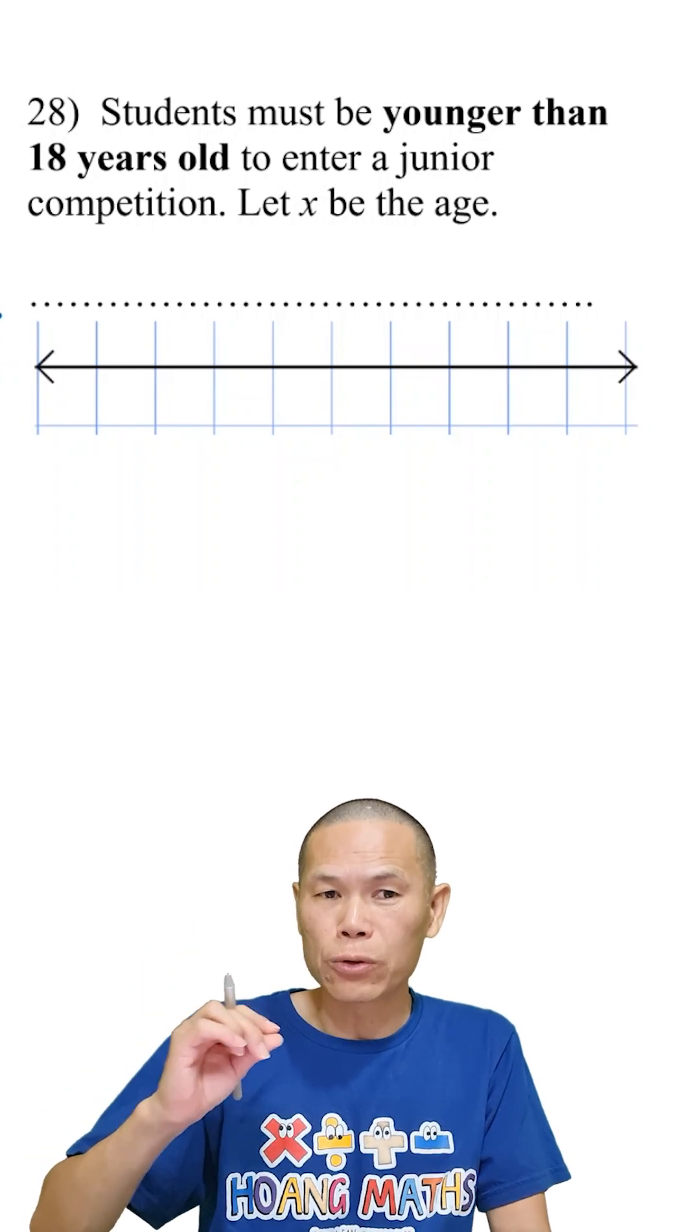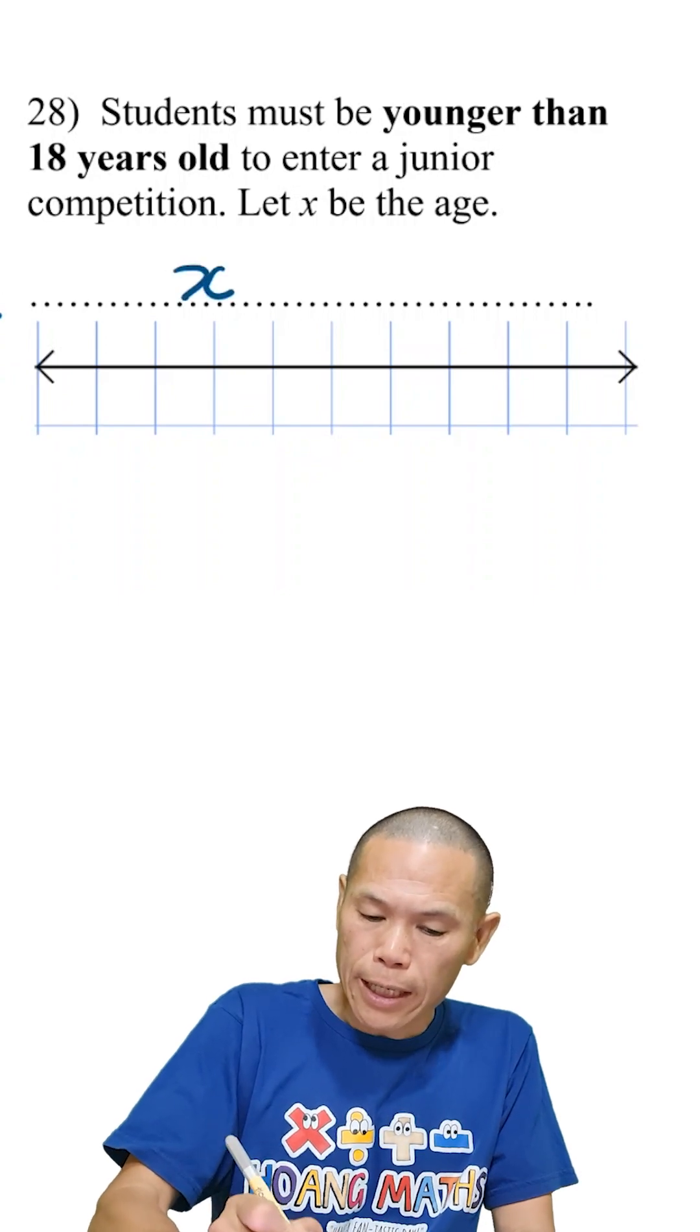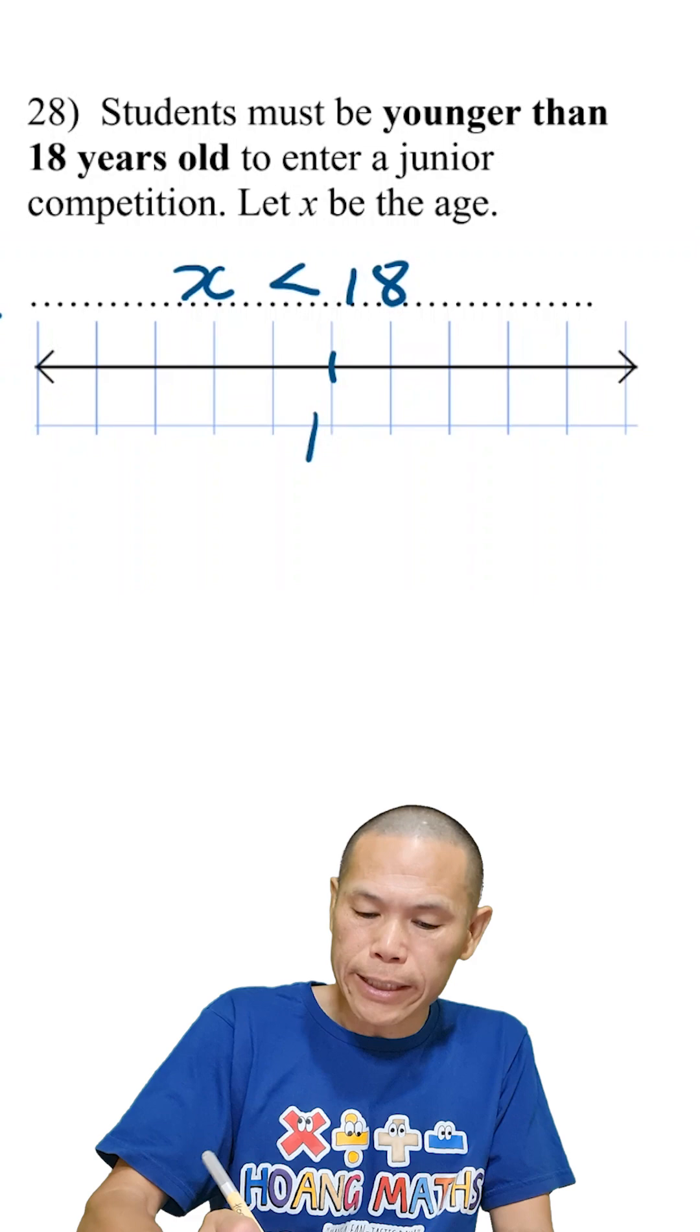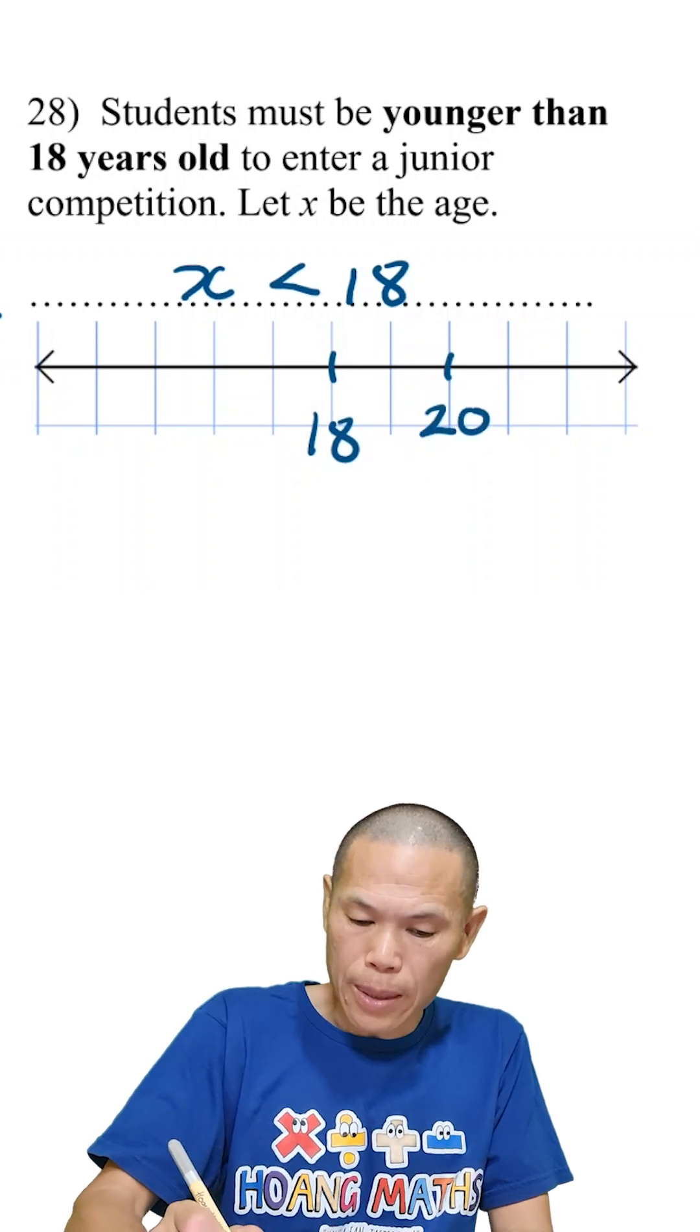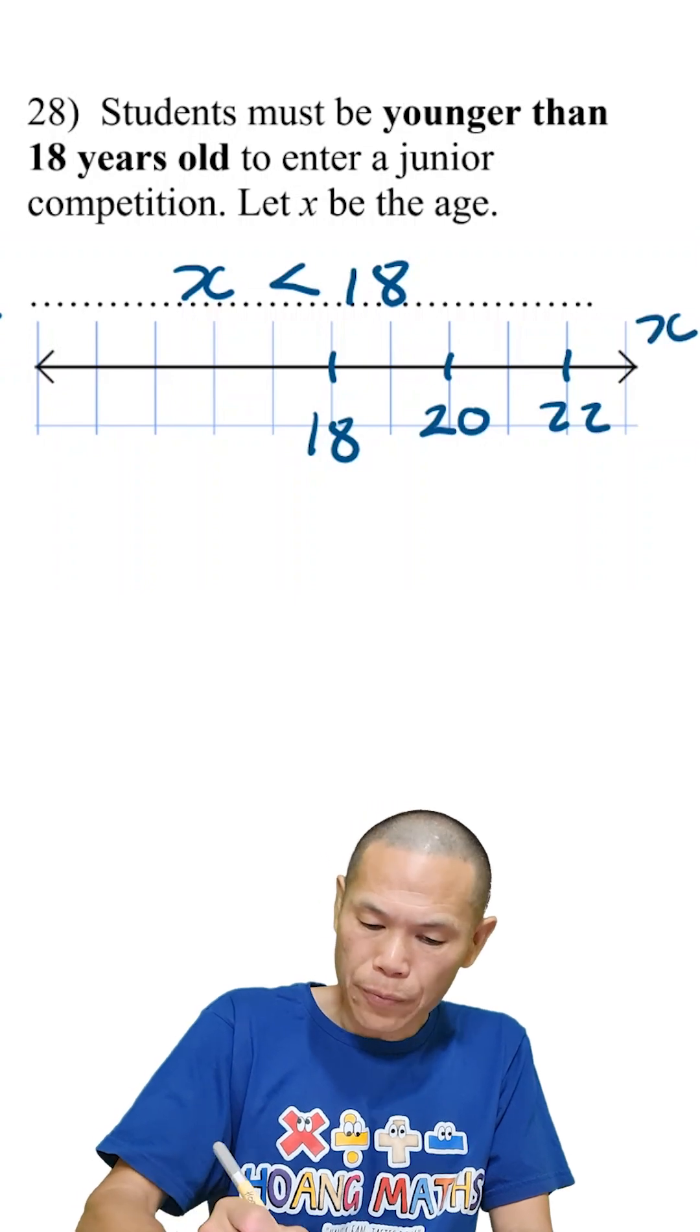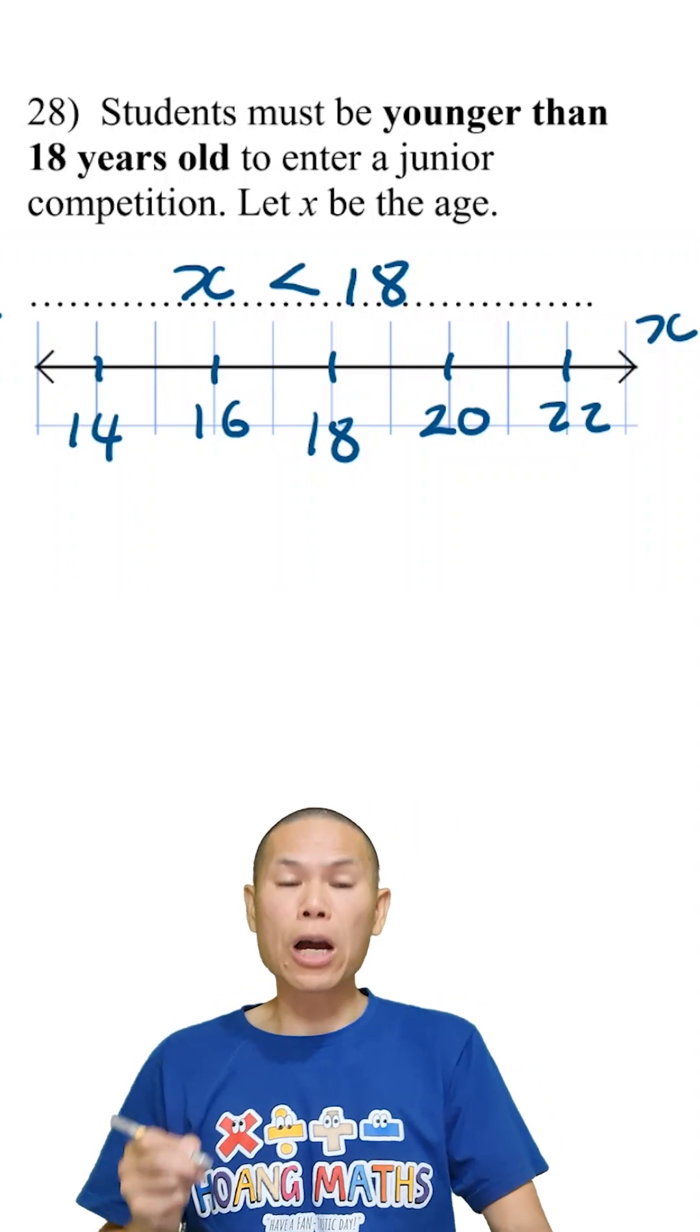Therefore, not including, so x is less than 18. Let me just write 18 here, 19, 20, and then this is 21, 22, x, and then 17, 16, 15, 14. So there you go.